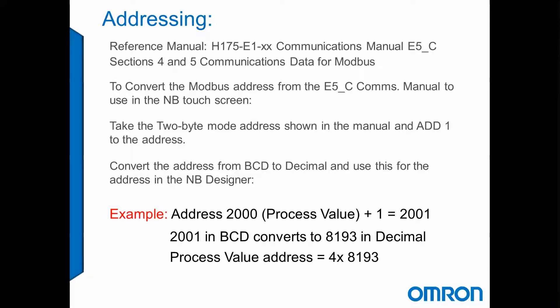As far as addressing is concerned, we're going to use reference manual H175-E1, the communications manual for the E5-C series. Sections 4 and 5 in that manual deal with the communication data for Modbus. To convert the Modbus address from the E5-C COM manual for use with the NB Touchscreen, we're going to use the 2-byte column mode address shown in the manual, add 1 to it, convert the address from BCD to decimal, and then use that as the actual address in NB Designer.